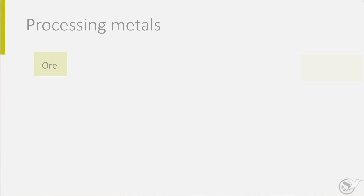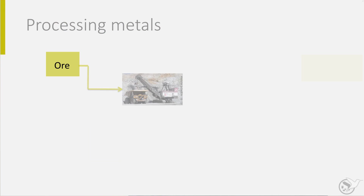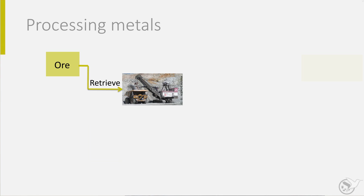Metals are retrieved from the earth by mining. In the figure top left you can see this activity in an open mine pit. From rock, the iron has to be retrieved by the blast furnace process. In this process very high temperatures are achieved which melts the iron from the rock.